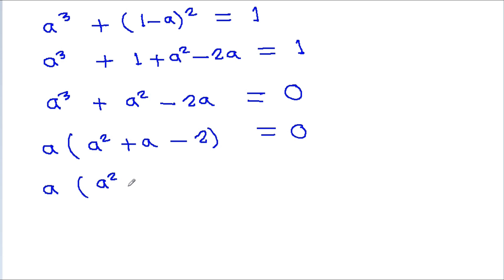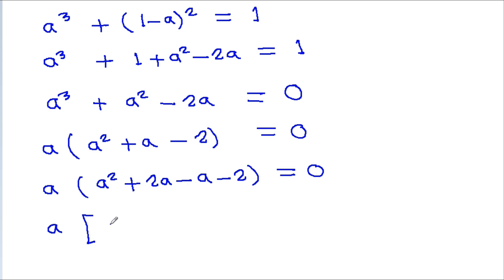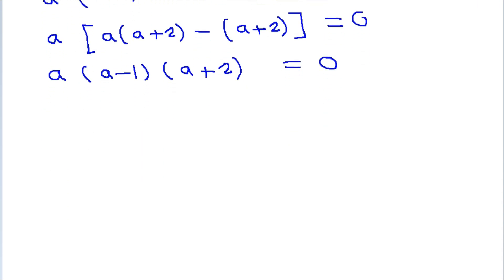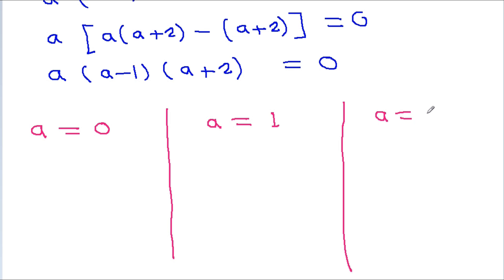Factoring, a times (a squared plus a minus 2) equals 0. We can factor further as a times (a plus 2) times (a minus 1) equals 0. So we get a equals 0, a equals 1, and a equals minus 2.